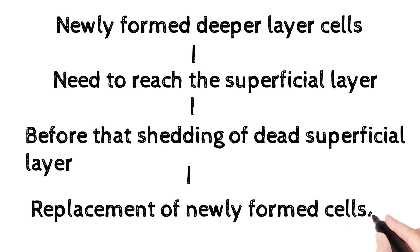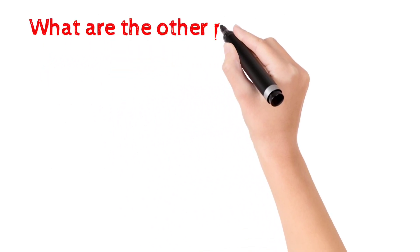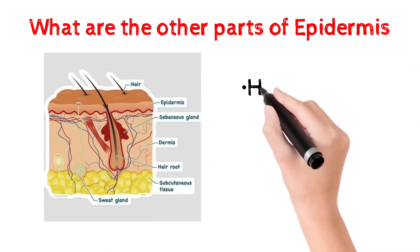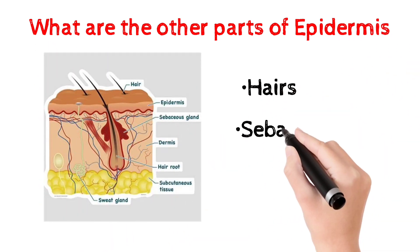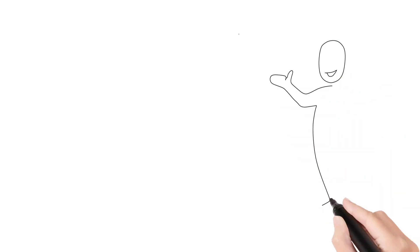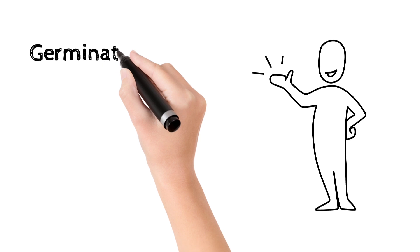The epidermis also contains hairs and secretions occur through sebaceous glands and sweat glands. In the epidermis we mainly see two layers: the germinative layer (deeper layer) and the stratum corneum (superficial layer).